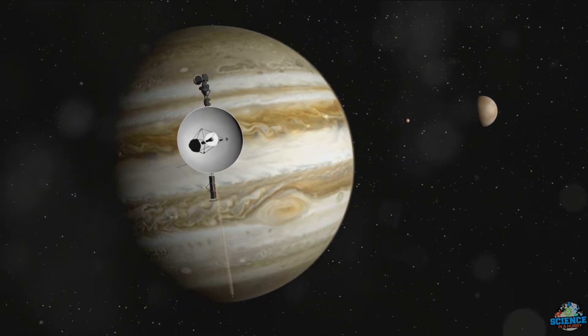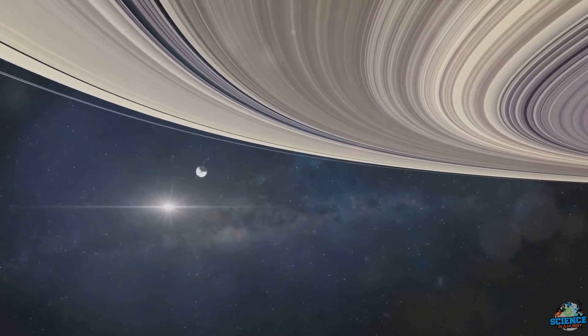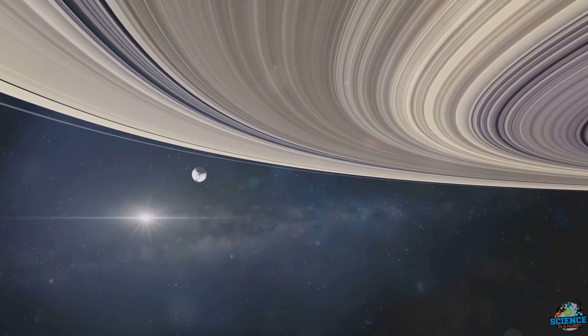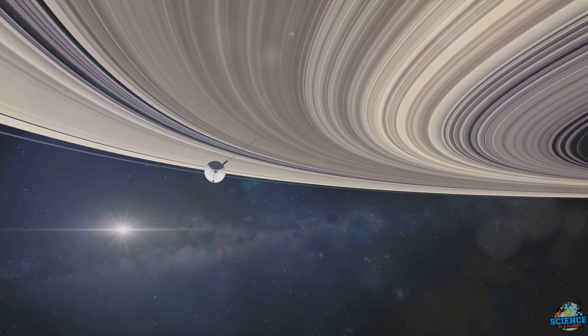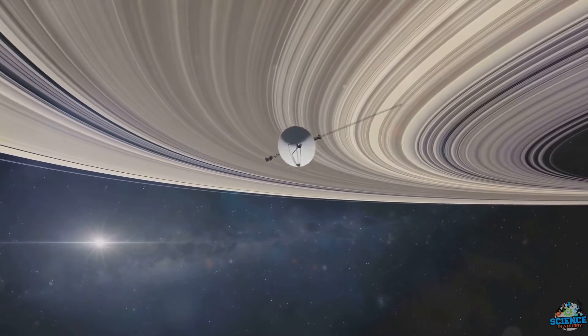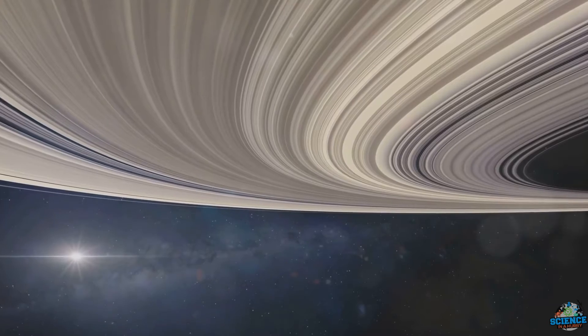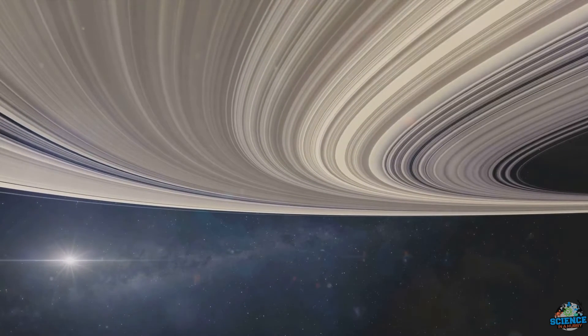In 1979, it offered us an unprecedented close-up of Jupiter, the gas giant, capturing exquisite images and invaluable data. Following this, in 1980, it was Saturn's turn to be observed, revealing the planet's intricate ring system like never before.